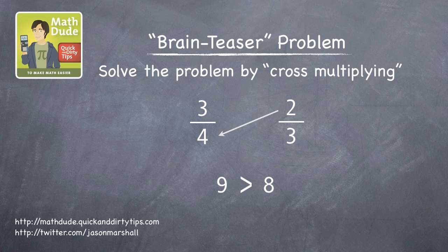Now, multiply the numerator of the second fraction by the denominator of the first. Two times four is eight. Write that below.